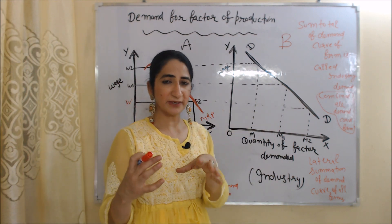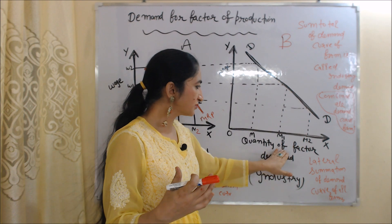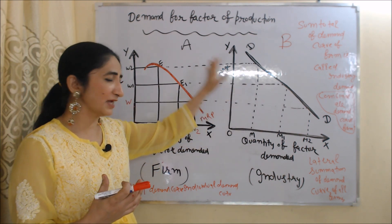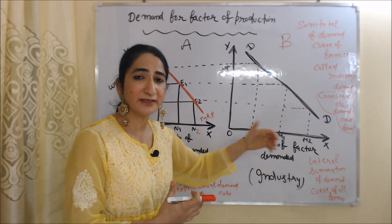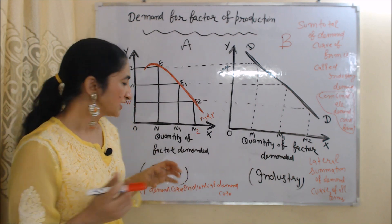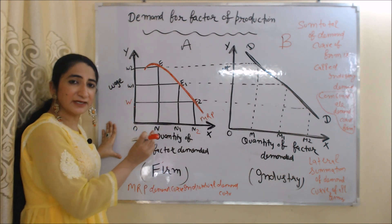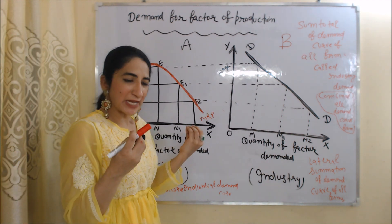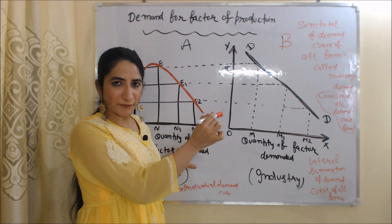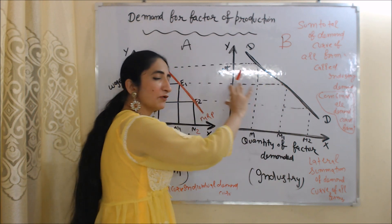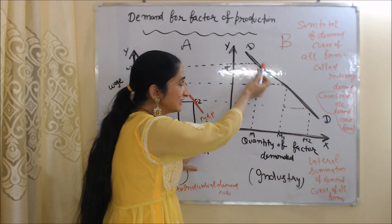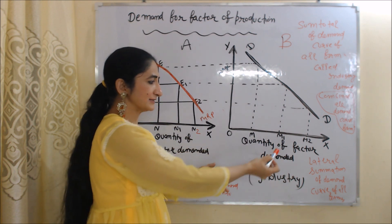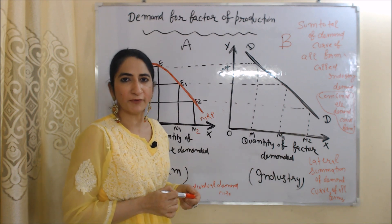The second diagram represents the industry. On the x-axis we have quantity of factor demanded, and on the y-axis we have wage rate. Wage rate in the industry and firm are the same — wage rate is decided by the industry and firms must follow the same wage rate. But the quantity of factor demanded is different in the industry, because the industry consists of many firms. ON in the firm represents labor employed by only one firm, but ON in the industry represents labor employed by all firms in the industry. MRP is the demand curve of the individual firm. When we combine demand curves of all firms in the industry, we get the industry demand curve. DD is the industry demand curve — it is the lateral summation of demand curves of all firms in the industry.